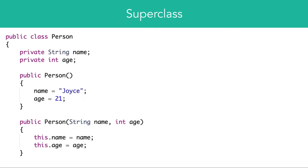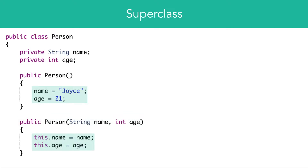Let's take a look at this Person class. It has two instance variables, name and age, as well as two constructors: a default no-argument constructor and a constructor with parameters. Notice how the constructors are used to initialize the instance variables name and age.